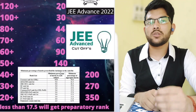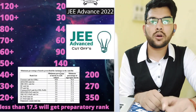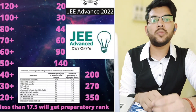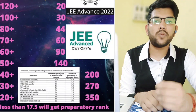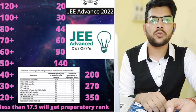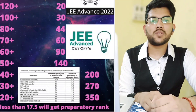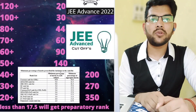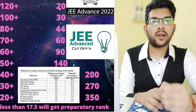For 70 or more marks, your rank will be under 60. For 60 or more marks, rank under 90. For 50 or more marks, rank under 140. For 40 or more marks, rank under 200. For 30 or more marks, rank under 270. For 20 or more marks, rank under 350. The cutoff for JEE Advanced is 17.5 marks — if you do not reach that, you will receive a preparatory rank and will be eligible only for the one-year preparatory course, not the original B.Tech course.